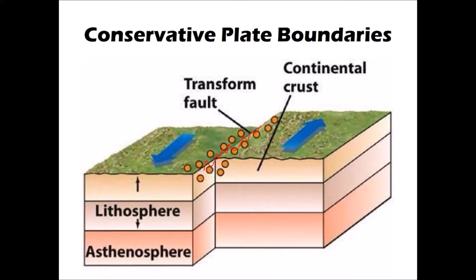Each of these orange dots represents the location of an earthquake occurring along that boundary, and we can see they are all relatively shallow. They don't extend deep into the lithosphere like at a destructive plate boundary with subduction. Although earthquakes here tend not to reach magnitude eight or nine, magnitude five, six, or seven earthquakes are quite common. Because they are shallow, that energy is released close to the surface, so those magnitude six or seven earthquakes can punch above their weight.